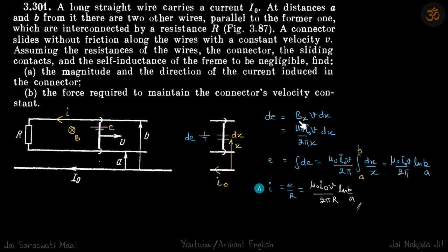is equal to BX at this point into V into DX. At this point BX is μ₀I₀ by 2πX. V is constant for the whole rod so we'll just take it as V times DX.